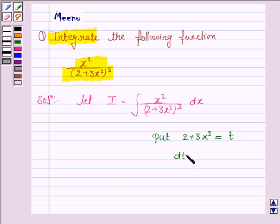So dt by dx is equal to 9x squared. This implies dt is equal to 9x squared dx, and this implies x squared dx is equal to dt by 9.